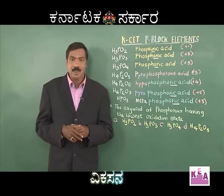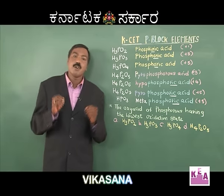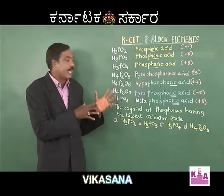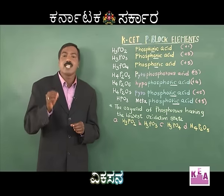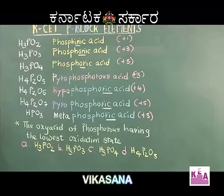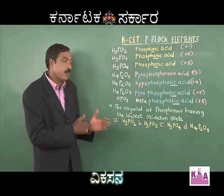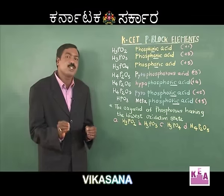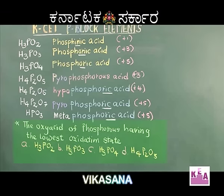Now, if I ask you the formula for hypophosphoric acid, it should automatically come to you as H₄P₂O₆. What is written in brackets after each name is the oxidation state of phosphorus in that oxyacid. I have given one question for you to work — since you have worked a couple of similar questions, this should be easy for you. Just pick and paste it.